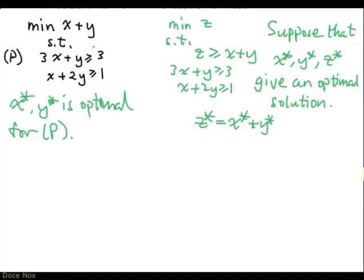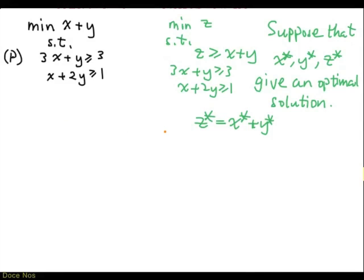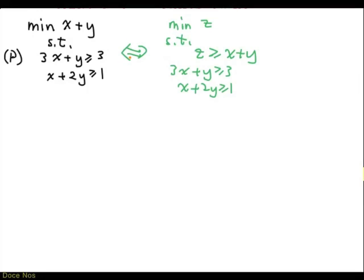If there is something better — if there is an x bar, y bar such that x bar plus y bar is less than x star plus y star — then that will give a better solution for the green problem, because we can set z bar equal to x bar plus y bar, and since z bar is less than z star, we have a better solution. So that's not possible. It is sufficient to consider the green problem instead. These two problems are equivalent.